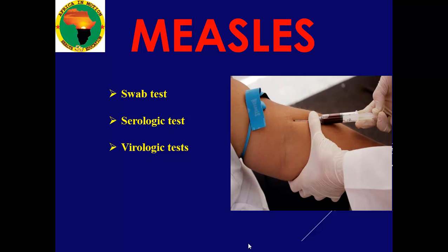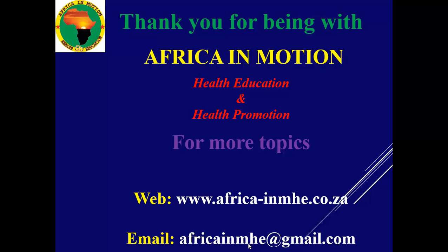For diagnosis, you can take a swab from the Koplik spots in the mouth and examine what's going on. A serological test can be done by taking blood and examining the serum. Another confirmation test is the virological test — PCR, polymerase chain reaction — to identify which virus is present.